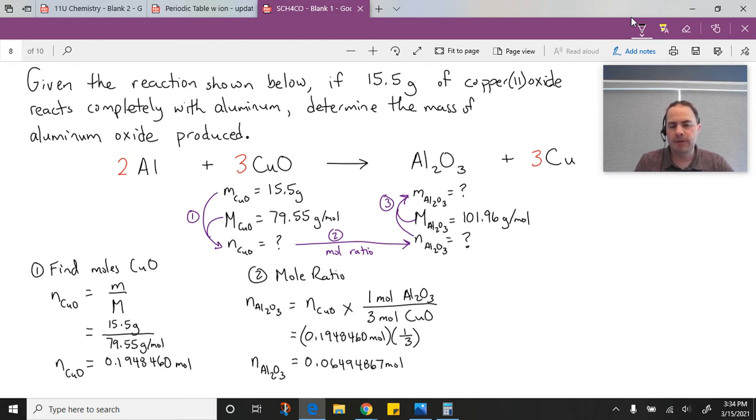Now we've got the moles of aluminum oxide and the molar mass, so we can do the last step, which is to find the mass of aluminum oxide. To find mass, it's moles times molar mass. So we have 0.06494867 moles times 101.96 grams per mole.